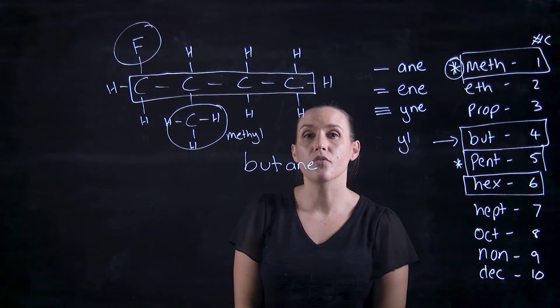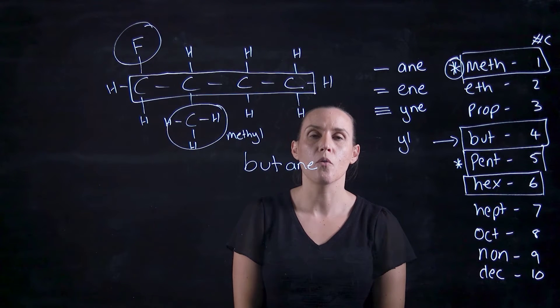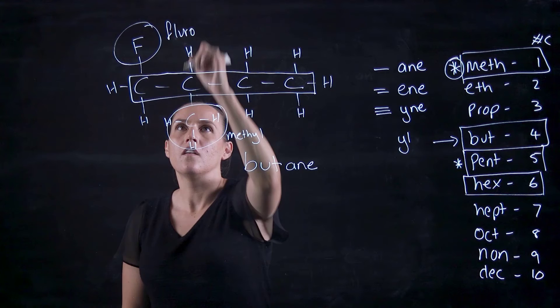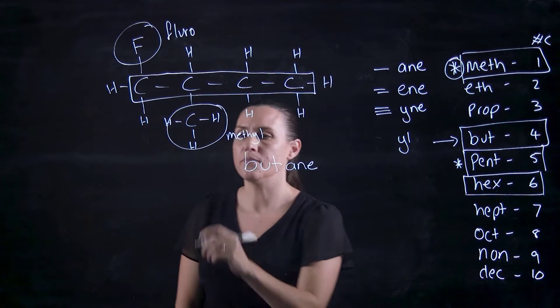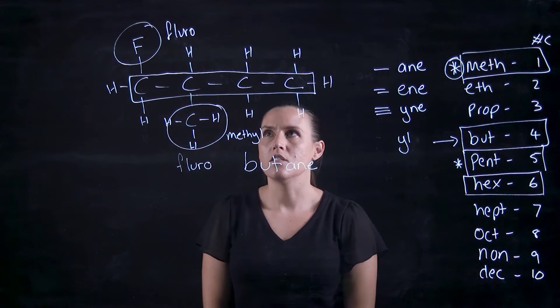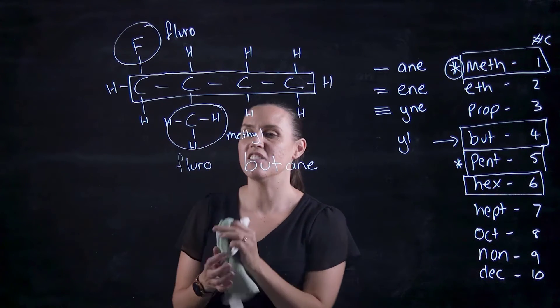And F is fluoro. So for your halogens, you have fluoro, chloro, bromo. So fluorine would be fluoro. So actually, before I draw that in, let's do the numbering.